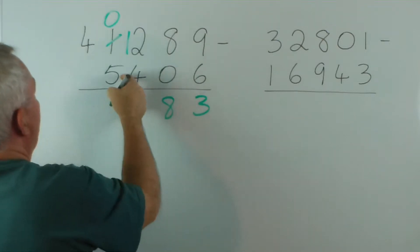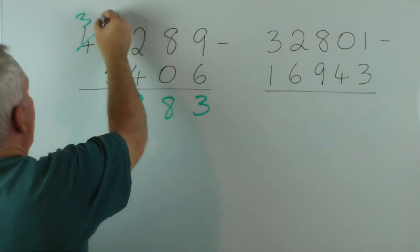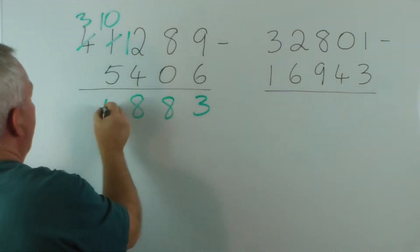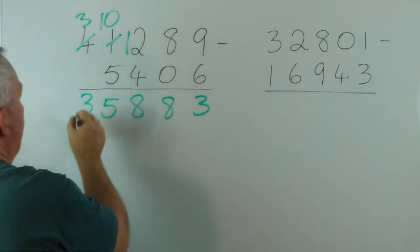12 minus 4 is 8. 5 from 0 we can't do, so we borrow. 10 minus 5 is 5. And 0 from 3 is 3.